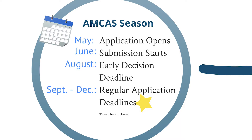Every year, the AMCAS application opens in early May, but you won't be able to submit your application until early June, which gives you about a month to work on it. AMCAS usually starts sending verified applications to medical schools in late June, at which point you may start to receive secondary applications. Deadlines for your AMCAS application fall between August 1st for the Early Decision Program and December. Find each medical school's AMCAS application deadline on our website, and check aamc.org/AMCAS for updates when you are preparing to apply.